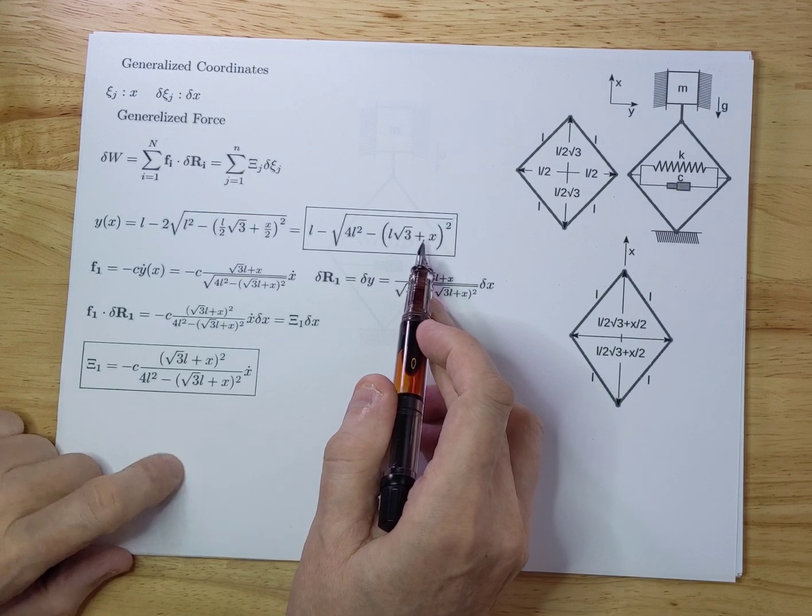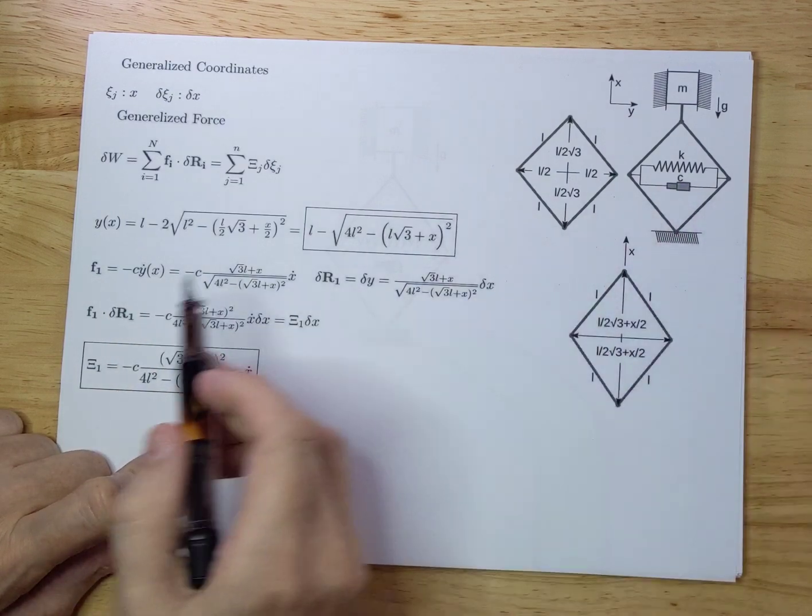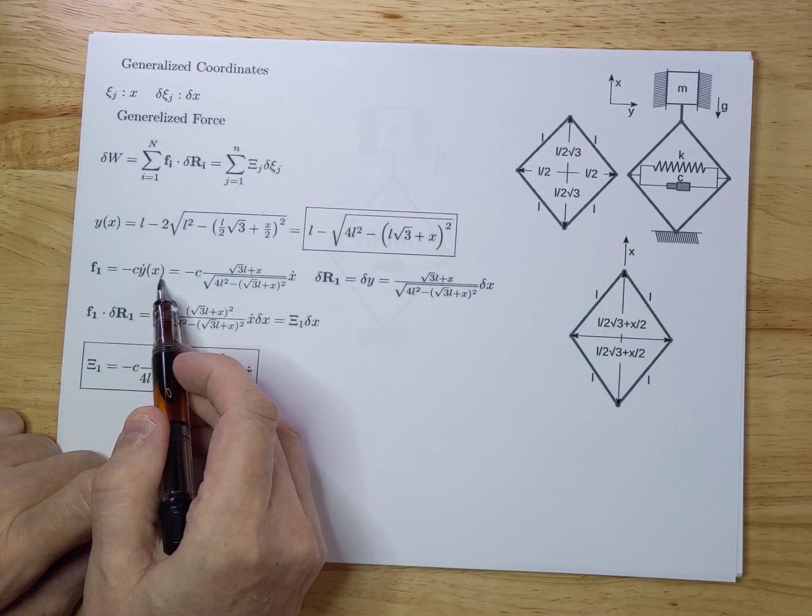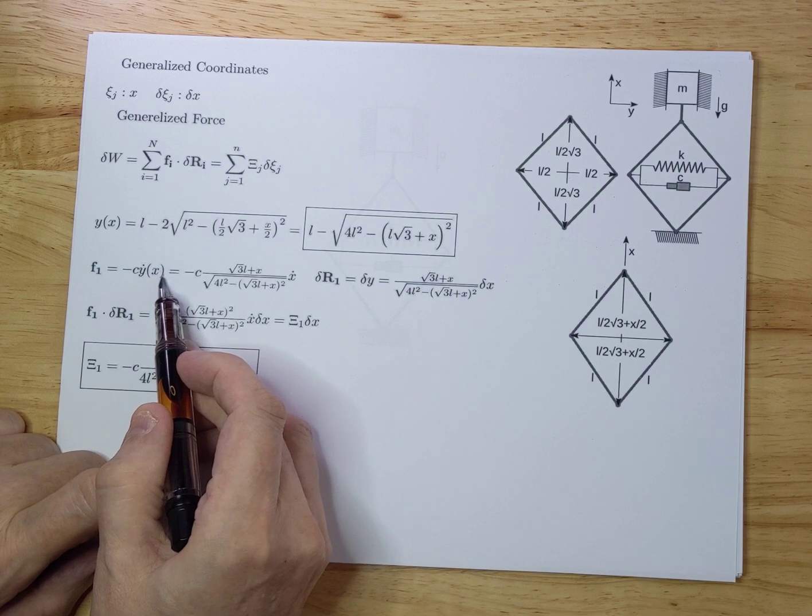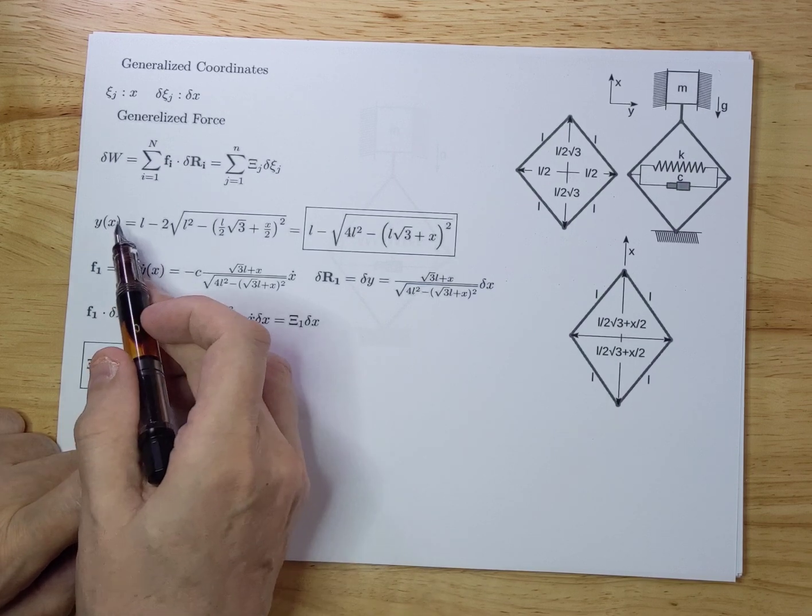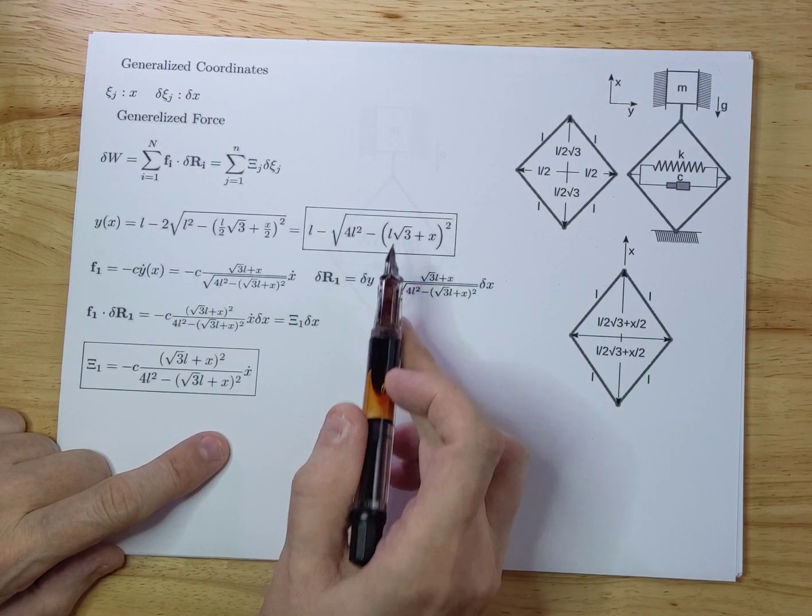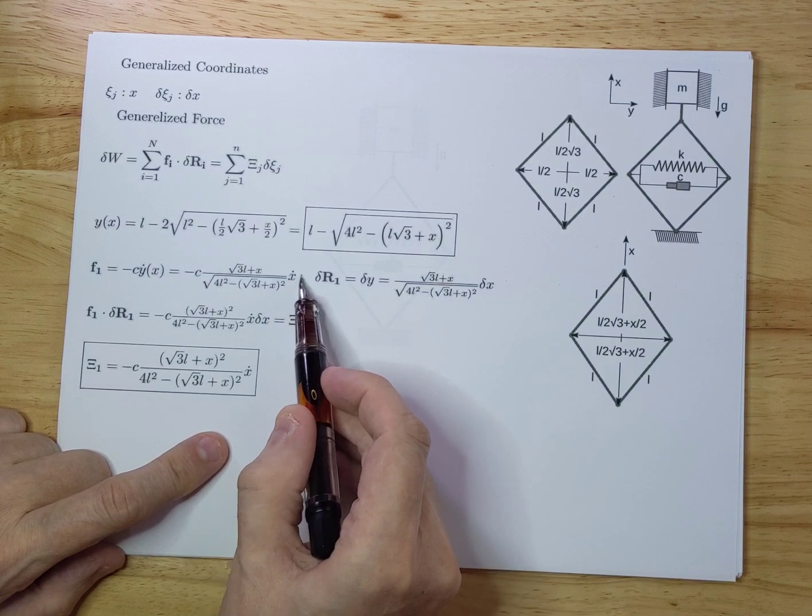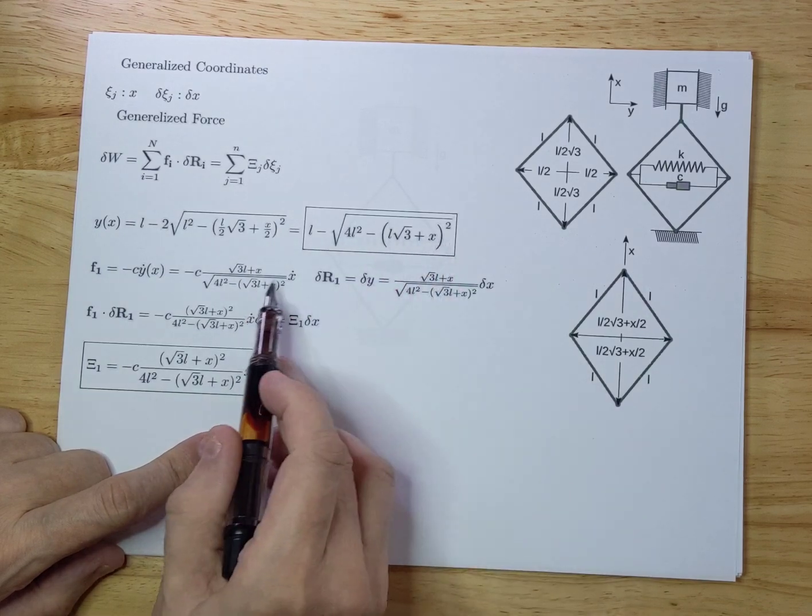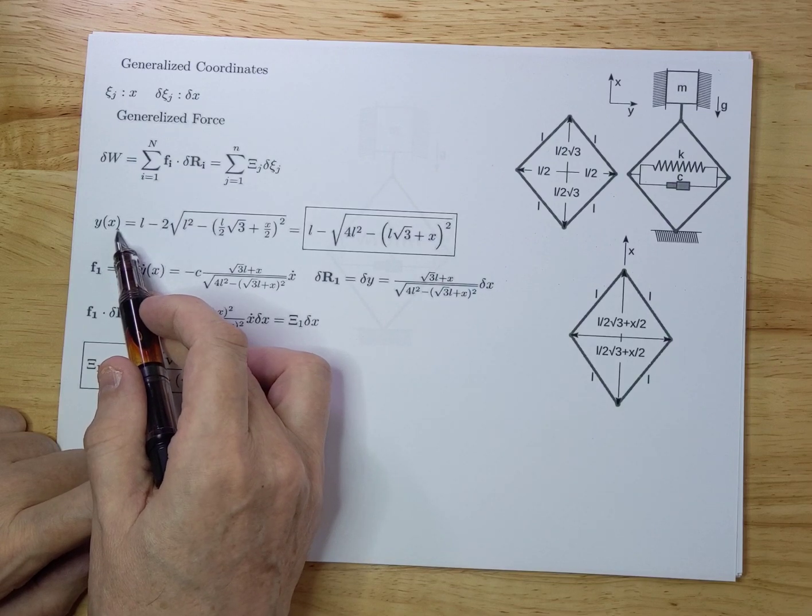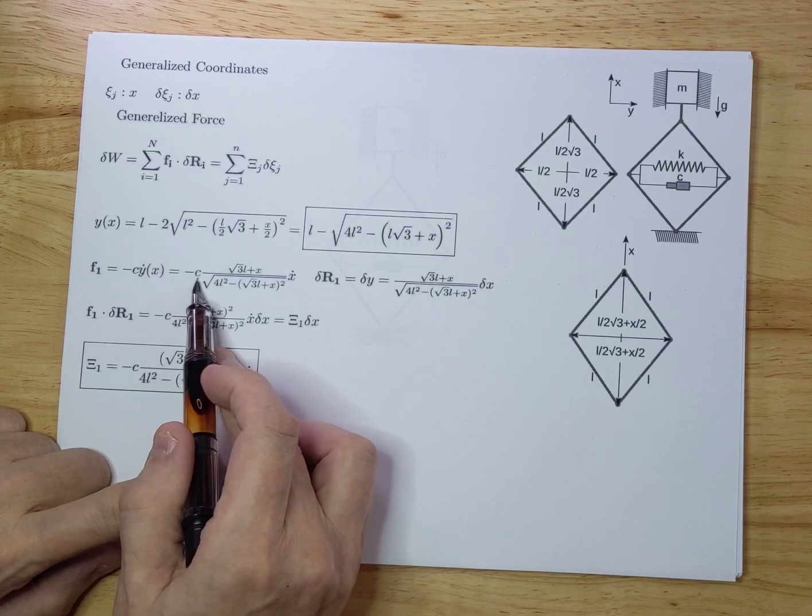Now we are in a position to calculate the generalized force, F1, which is, on a damper by definition, minus C times Y dot. Y dot is dY/dt. If you want to calculate dY/dt, you have to take Y(X), you first do a dY/dX, and then you do a dX/dt. The dX/dt is X dot, and the dY/dX is the differentiation of this function here. If you differentiate dY/dX, you will get this value here, and obviously you copy minus C.